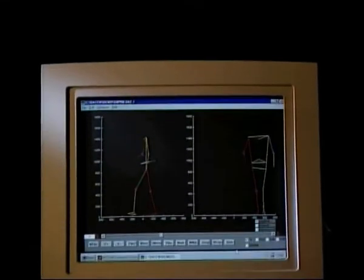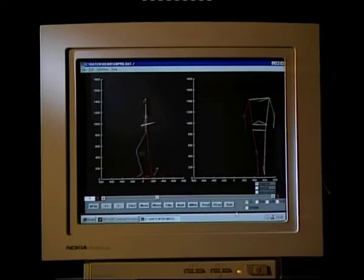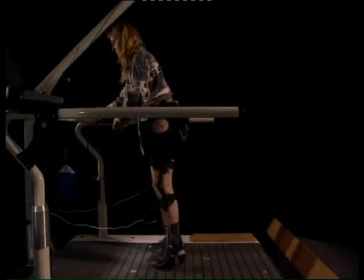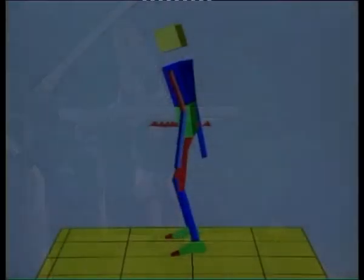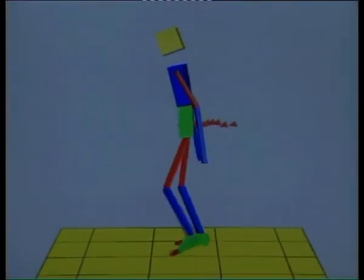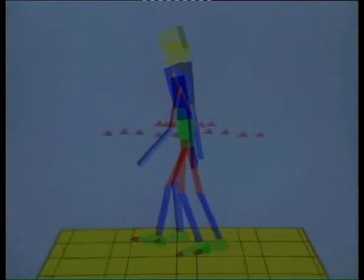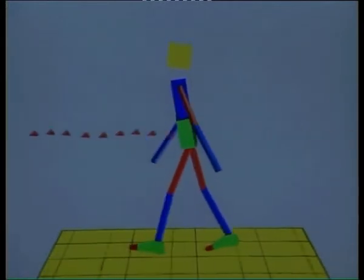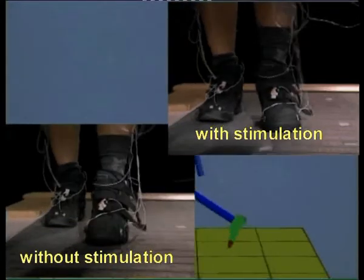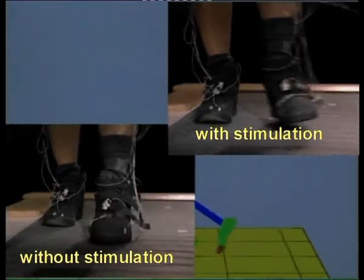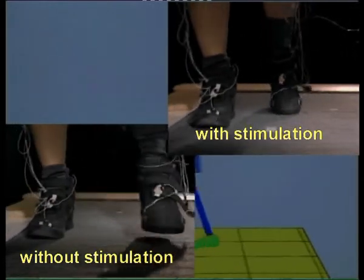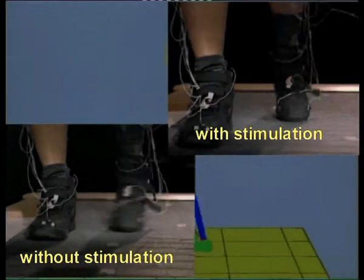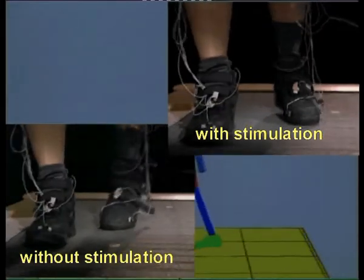Besides the development of more and more sophisticated robots, the research results are used for medical applications. In particular, the rehabilitation of hemiparetic people can be supported by simulations of the human gait. The optimized motion is compared with the gait pattern of the impaired person. This way, an appropriate stimulation of all muscles is determined, and the patient can learn to walk normally within a short time.